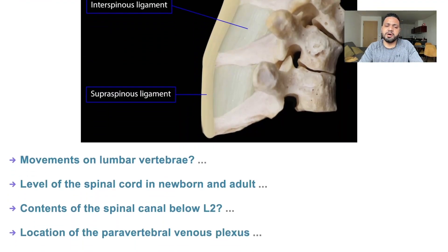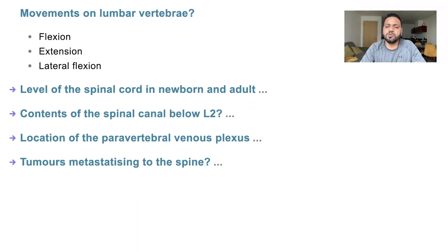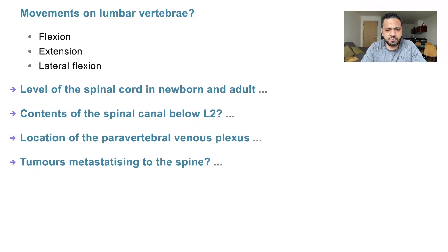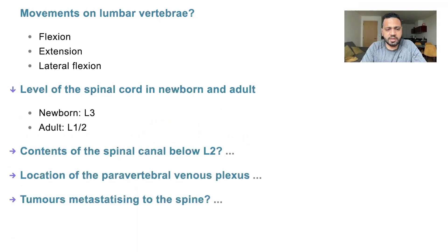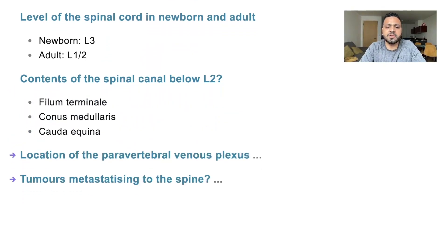Lumbar spine movements include flexion, extension, and lateral flexion. Regarding the level of the spinal cord: in a newborn it is at L3, and in an adult it is at L1-2. Below L2, the spinal canal contains the cauda equina, filum terminale, and conus medullaris.